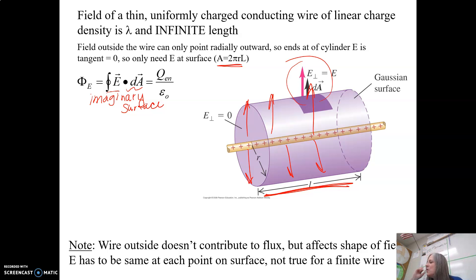Okay, so when I set up my integral here, it's not really an integral, because the electric field is constant, so that's just E. My area is going to be this, but this is of my imaginary surface, so the area of a cylinder is 2 pi r L.